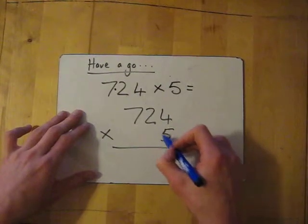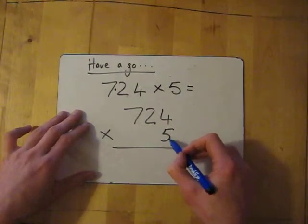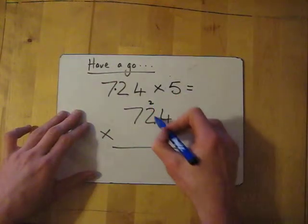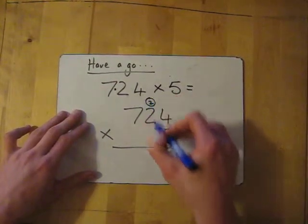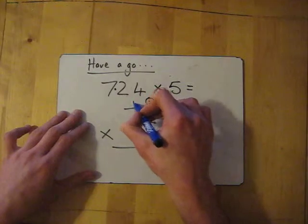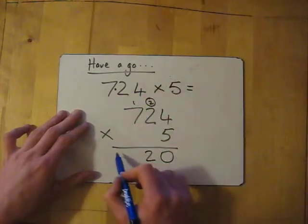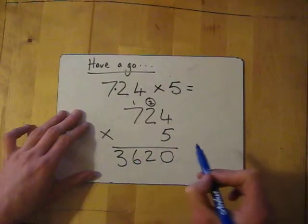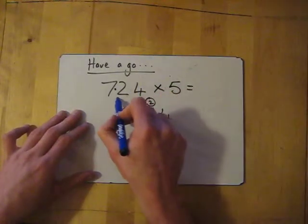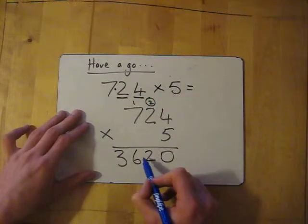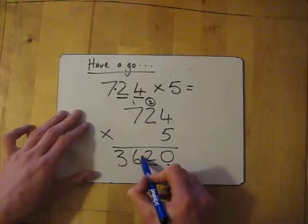5 times 4 is 20, put down the 0, carry the 2. 5 times 2 is 10, add the 2 is 12, carry the 1. 5 times 7 is 35, add the 1 is 36. Done. Now we look at the end: we've got two numbers after the decimal place, so in our answer we have to have two.